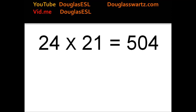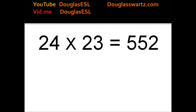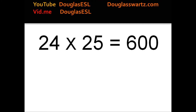24 times 21 equals 504. 24 times 22 equals 528. 24 times 23 equals 552. 24 times 24 equals 576. 24 times 25 equals 600.